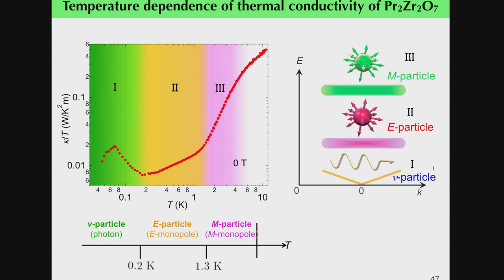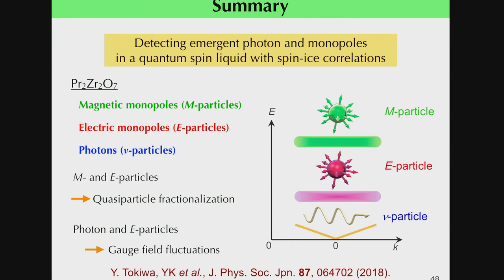From the characteristic temperature dependence of thermal conductivity, we identify the quasi-particle excitations in this quantum spin-ice material as the M particle, E particle, and μ particle, respectively. In the quantum spin-liquid state of the pyrochlore magnet with spin-ice correlations, we find these three exotic emergent quasi-particle excitations, as expected in such a system.